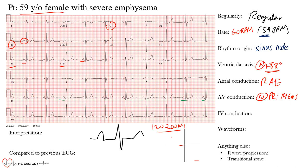Next is intraventricular (IV) conduction, assessed by the QRS duration. The PR interval runs from the start of the P-wave to the start of the QRS, including the P-wave and PR segment. The QRS duration runs from the beginning to the end of the QRS complex. Normal QRS duration is less than 120 ms (typically 70–110 ms). In this case, the QRS duration was 90 ms — within normal limits — so intraventricular conduction is normal.